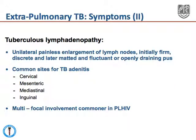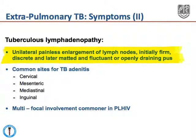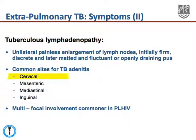Tuberculosis involving the lymph nodes usually presents with unilateral painless enlargement of lymph nodes. These nodes initially tend to be firm and discrete, but later they become matted and fluctuant, and may actually openly drain pus. The common sites of lymph node TB include the cervical area, the mesenteric area, intrathoracic nodes, and the inguinal area.